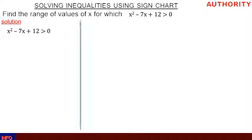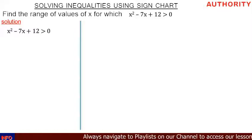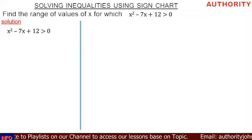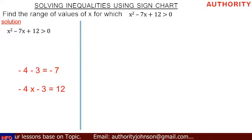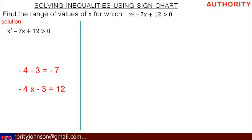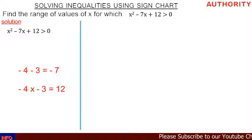We have x squared minus 7x plus 12 is greater than zero. Let's factorize. We ask ourselves: what are the two numbers that when you add them together give minus 7, and when you multiply them give positive 12? We discover the two numbers are minus 4 and minus 3. Minus 4 plus minus 3 gives minus 7, and minus 4 times minus 3 gives positive 12. So in place of minus 7x, let's replace it with minus 4x minus 3x.